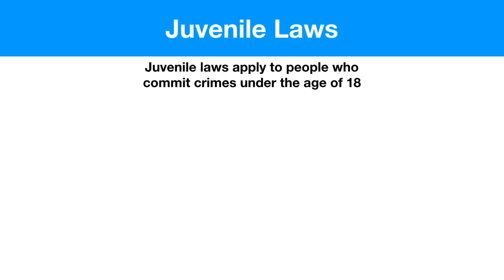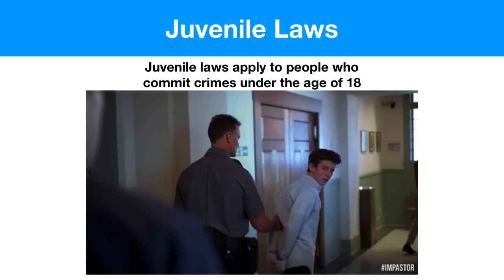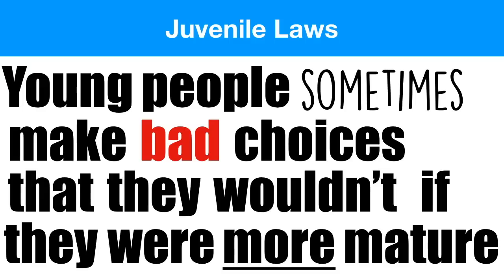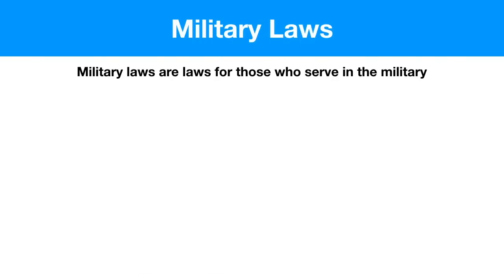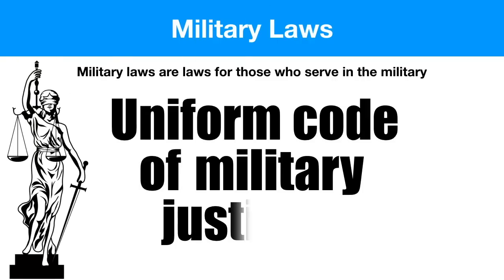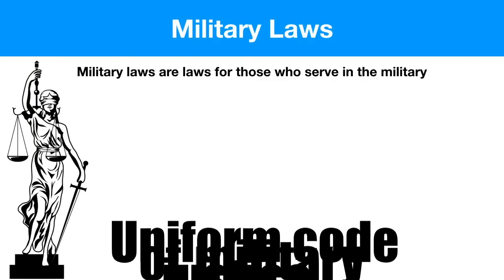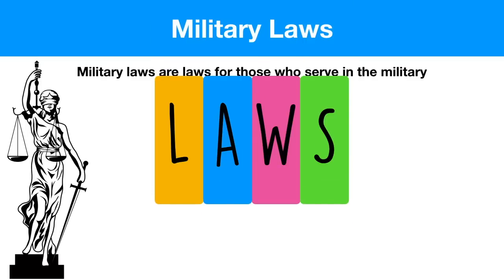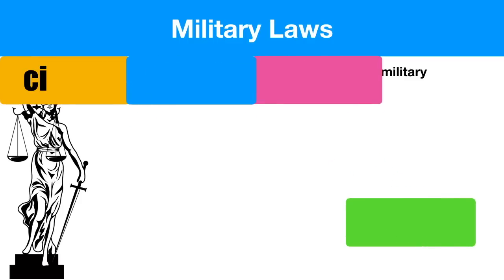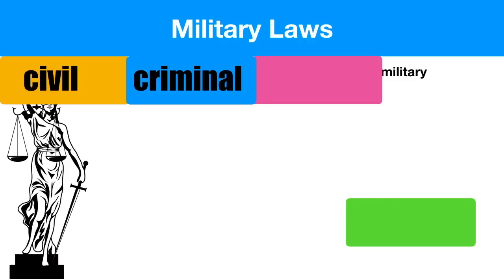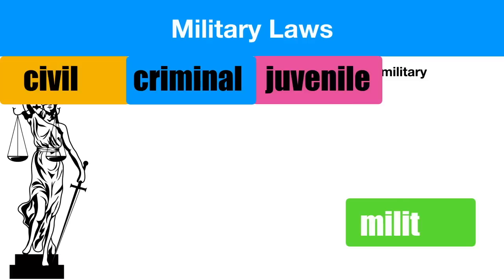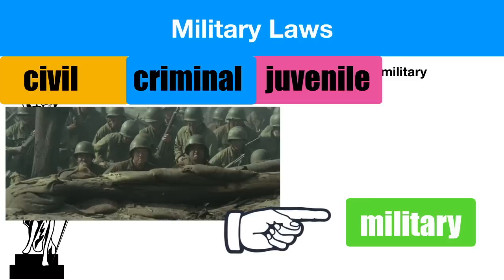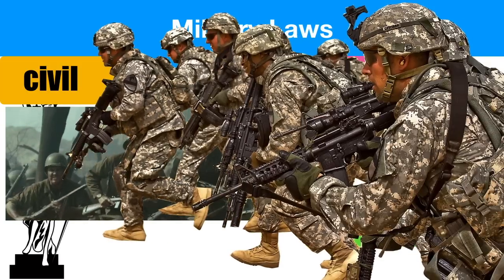Juvenile laws involve crimes, but only for those under the age of 18. It works much the same way, except the state is going to be a little bit more lenient because we're not always making the best decisions when we're under the age of 18. Military law is a completely different justice system that involves only those who are serving in the military — the army, the navy. They have their own rules and justice system because they have a lot of different responsibilities. A soldier's job is to defend the nation and fight in war, and that might require them to do things that regular civilians don't need to do. Our justice system is not equipped to handle these situations, so there's an entirely different, separate justice system called military law.